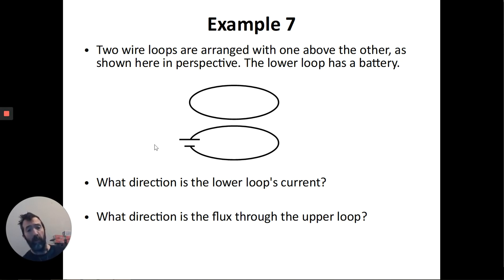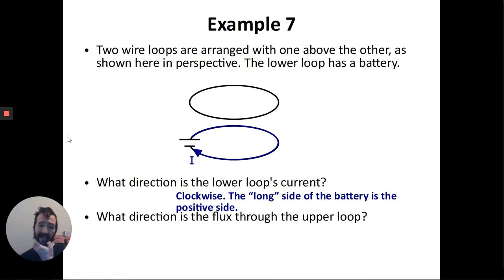On a battery symbol, the long side is the positive side. And current comes out of the positive side. So the current is going clockwise. So this current that's flowing in that loop has to generate a magnetic field. The upper loop does not have a battery. So there's no current there. At least not necessarily. We'll talk about this more next week.